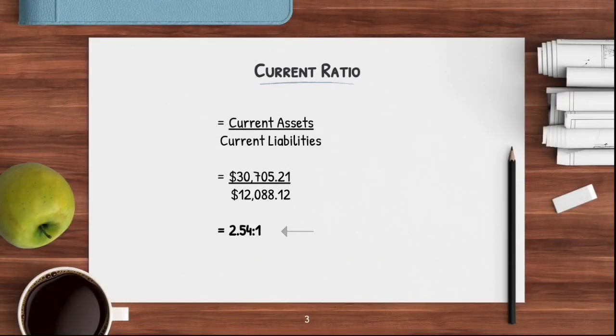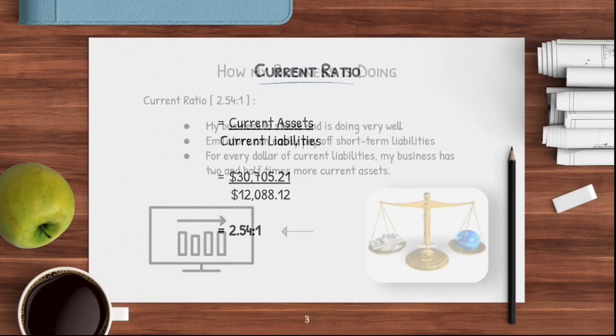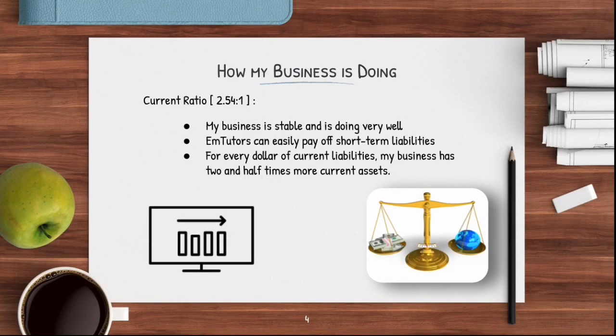For my current ratio, I divided my current assets by my current liabilities and got 2.5421. This means that my business is stable and I am doing very well. I can easily pay off short-term liabilities. For every dollar of current liabilities, my business has 2.5 times more current assets.